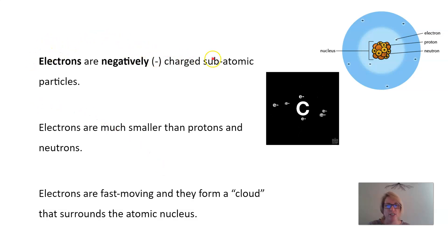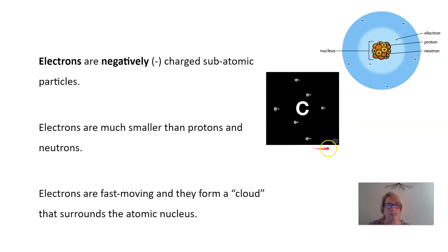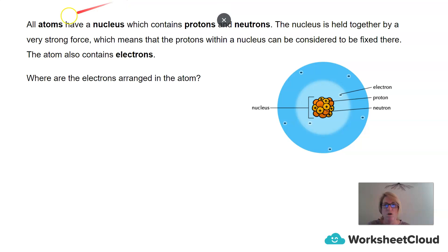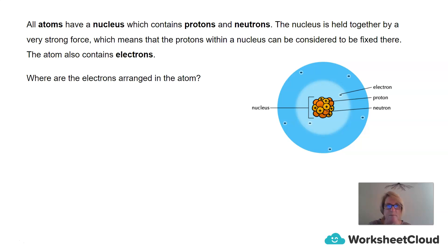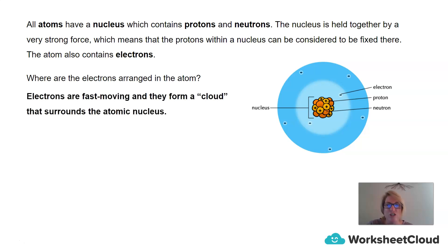Electrons are negatively charged sub-atomic particles. They are much smaller than protons and neutrons, and electrons are fast-moving. They form a cloud that surrounds the atomic nucleus. All atoms have a nucleus which contains protons and neutrons. The nucleus is held together by a very strong force, which means the protons within a nucleus can be considered fixed there. The atom also contains electrons arranged in a cloud surrounding the nucleus.